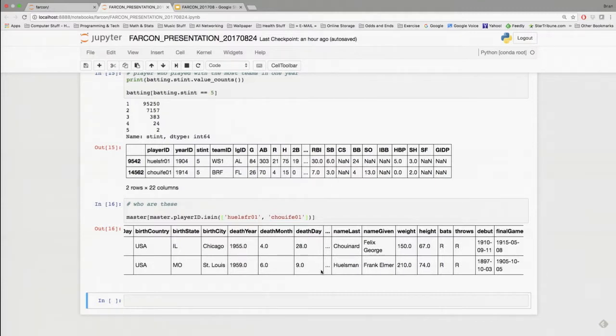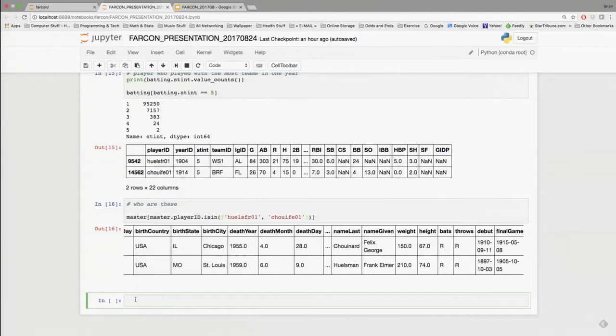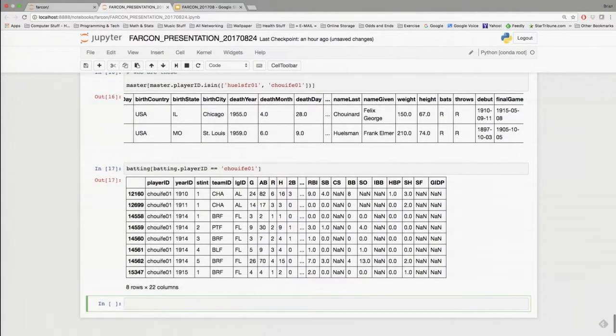We see that one was Felix, probably going to mispronounce that, Chouinard, and then Frank Huelsman. You can see their debuts were 1910 and 1897, so Frank was around quite a while before he was shipped from place to place. Let's go ahead and do one more thing here. Here is Felix Chouinard's information. You can see in 1914 he played for those teams, those five right there. He actually only played basically three years in the leagues.